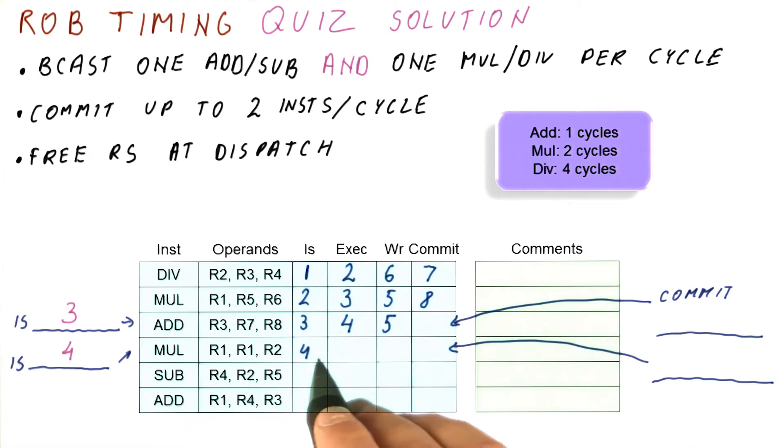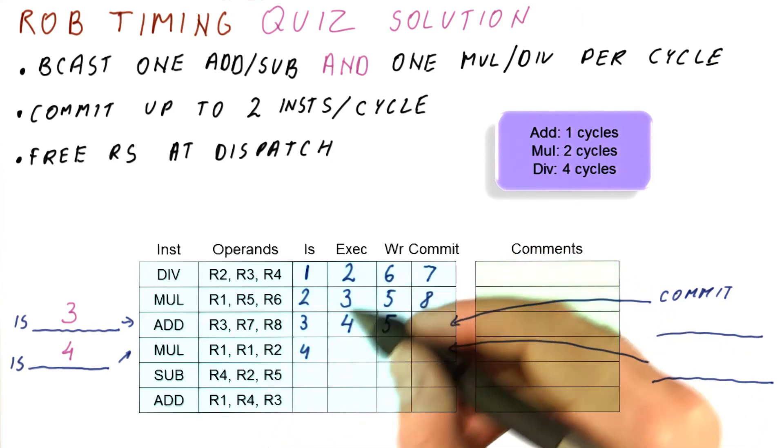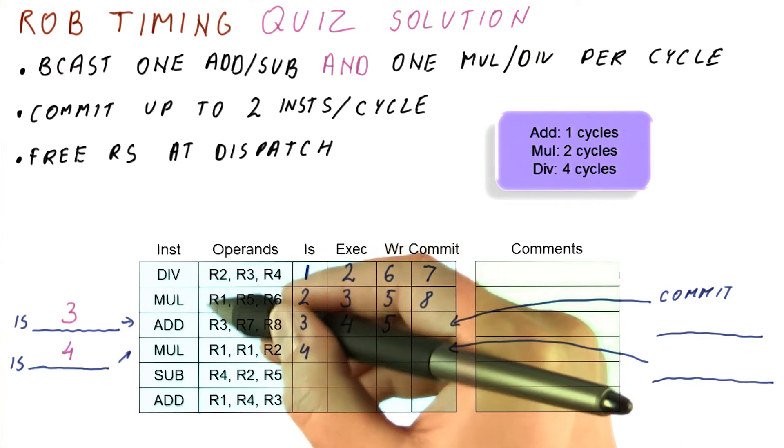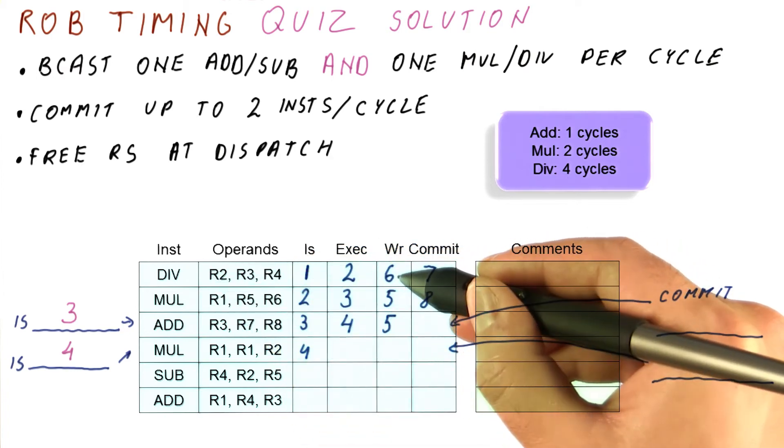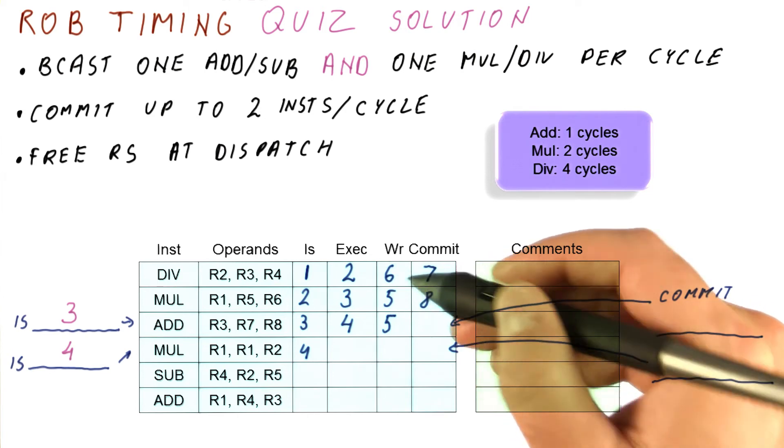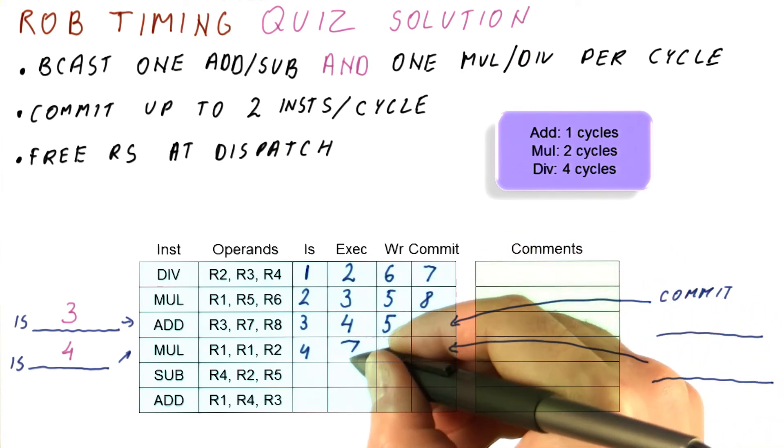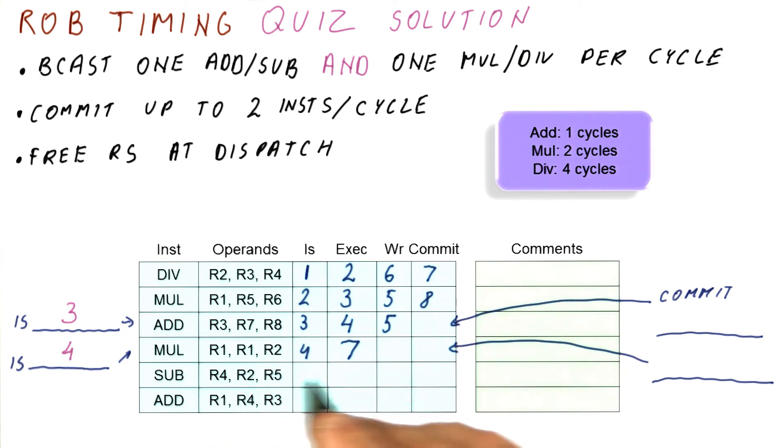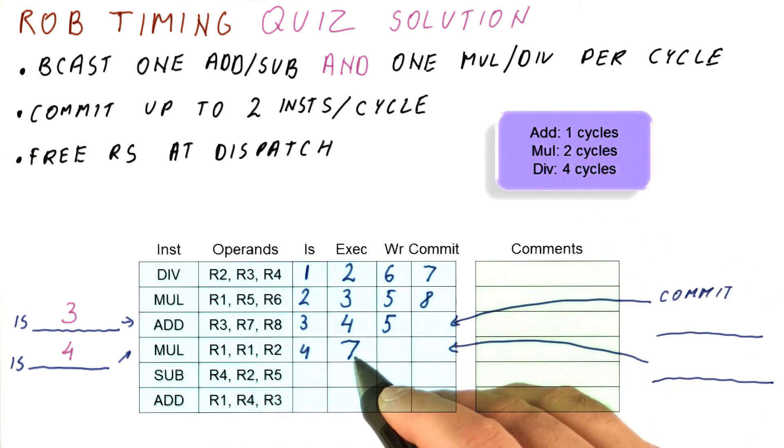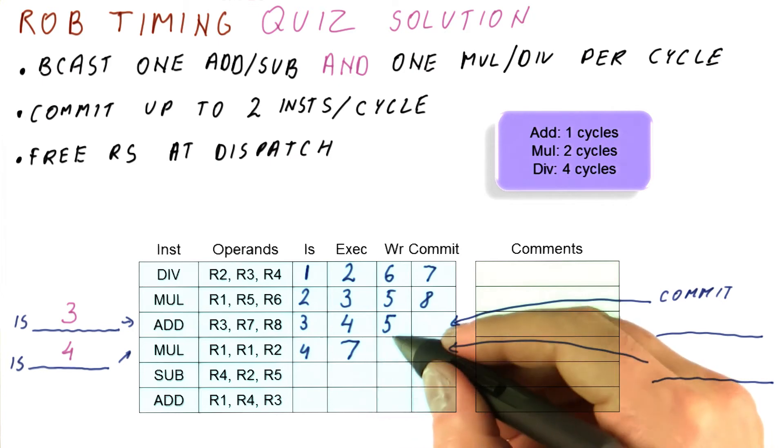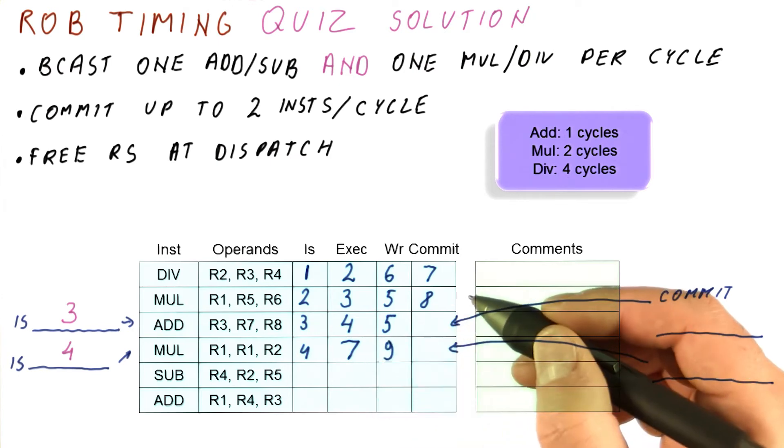Now let's see what happens with the multiplication here. It issues in cycle four. It uses R1 and R2. So it actually cannot execute until both of those results have been written by instructions divide and multiply here. So we have to wait for the later of these two, which is cycle six. That's when we dispatch, we can begin execution in cycle seven. This is a multiplication, takes two cycles. So in cycles seven and eight, it's executing. In cycle nine, it will write its result.